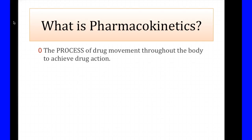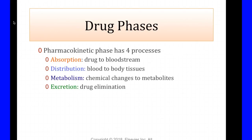So what is pharmacokinetics? It's a process, and I'm going to go through it with you. Pharmacokinetics is the process of the drug moving through the body — we want the drug to work in our body and do what it's supposed to do. There are four processes: absorption, distribution, metabolism, and excretion.